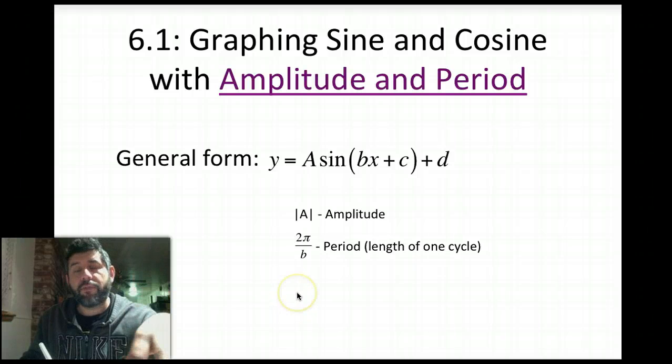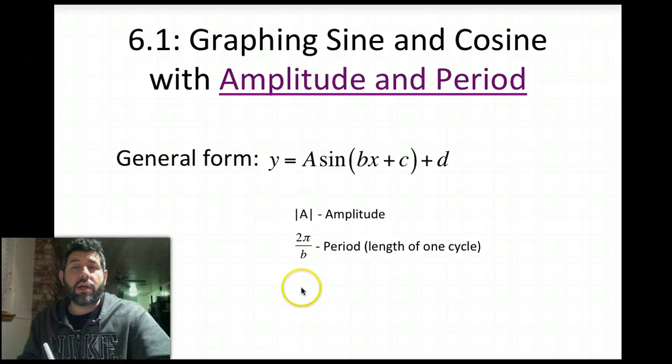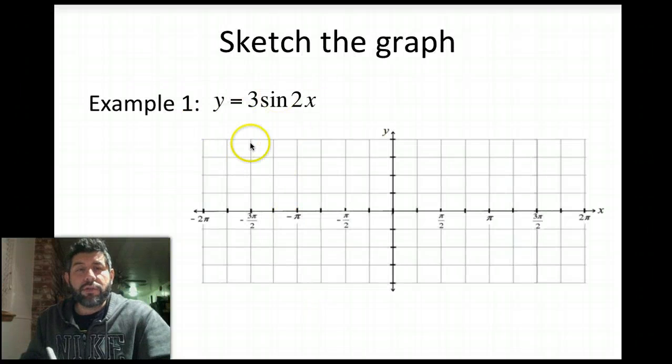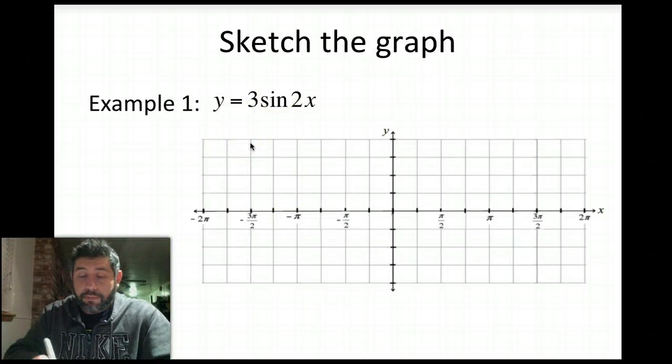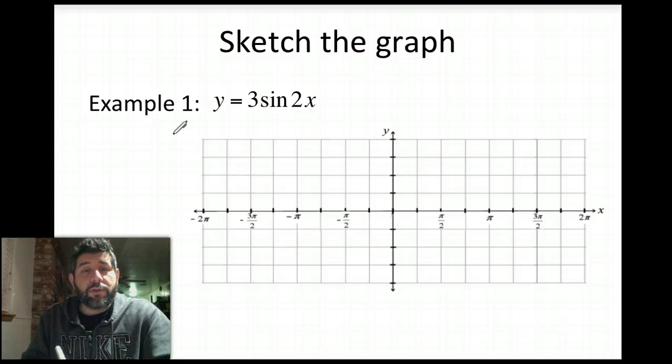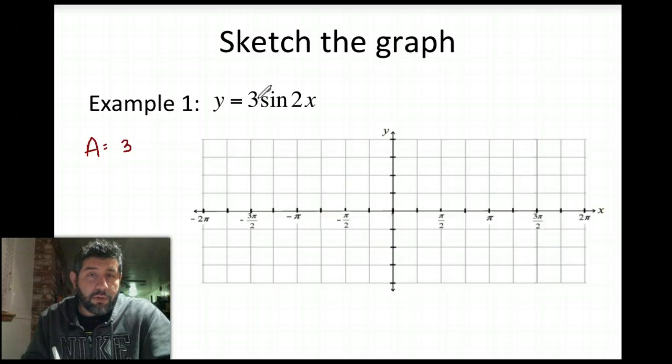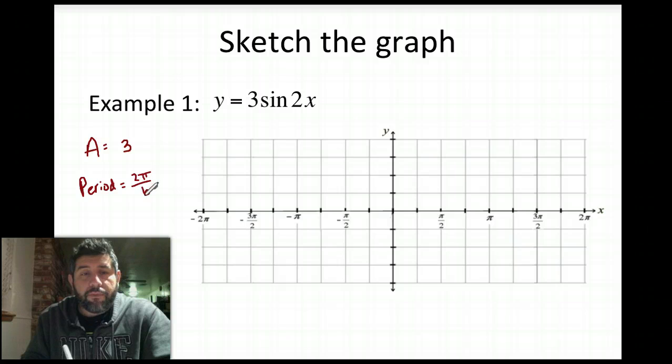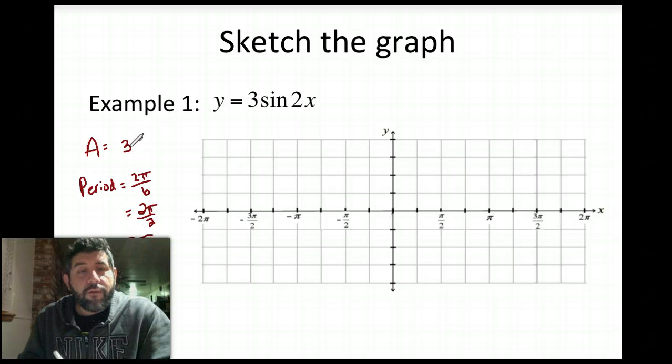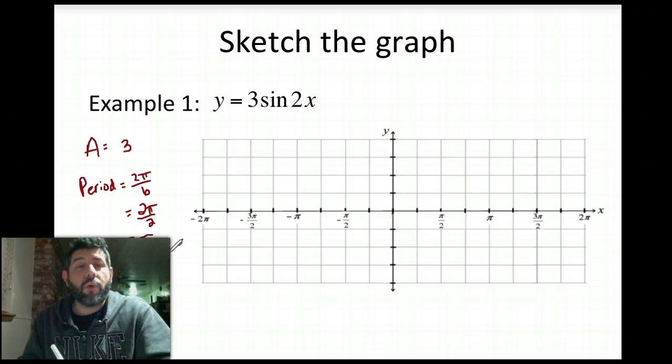So let's go ahead and take this information and look to graph a sine and cosine function. So I have this example here, y equals 3 sine of 2x. And what we're going to do is, first we want to find the amplitude. And so the amplitude here is going to just be 3, because we take the absolute value of 3 and we get 3. And our period is going to be 2 pi over b, and in this case b was 2, so 2 pi over 2, which is pi. So what this says is that for an amplitude of 3, I'm going to have a period of pi. That's going to be the time it takes for me to get to one cycle.